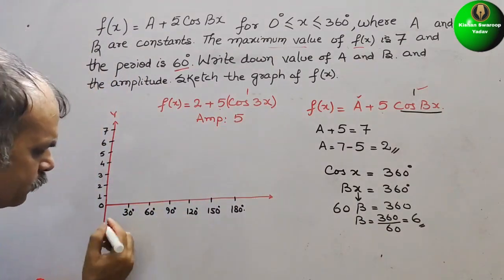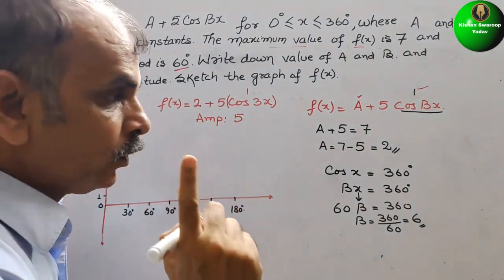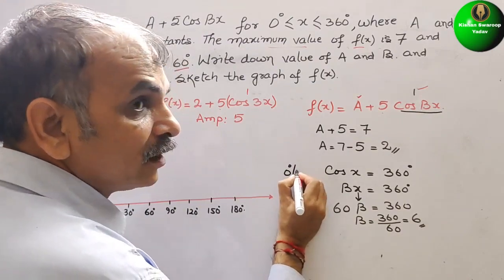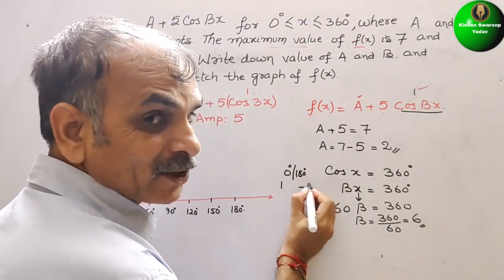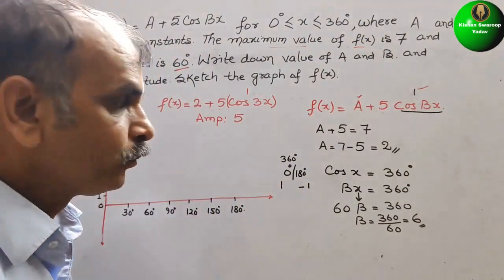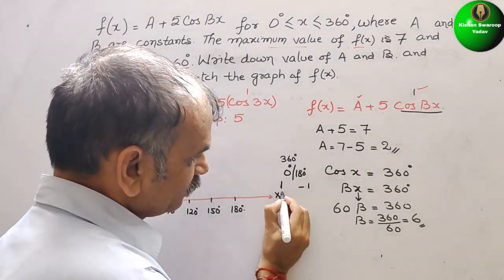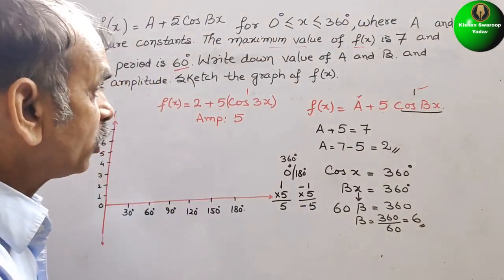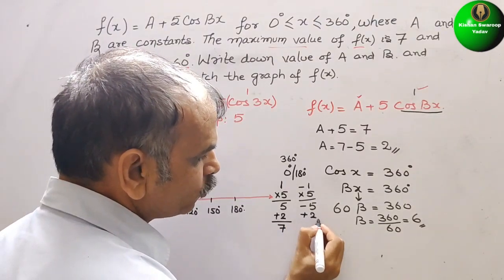We know cos(0°) = 1, so f(0°) = 2 + 5(1) = 7. At 180° (which maps to 30° after dividing by 6), cos = -1, giving f = 2 + 5(-1) = -3. At cos(90°) = 0, f = 2 + 5(0) = 2. So the y-values are: at 0° → 7, at the minimum → -3, at the midpoint → 2.